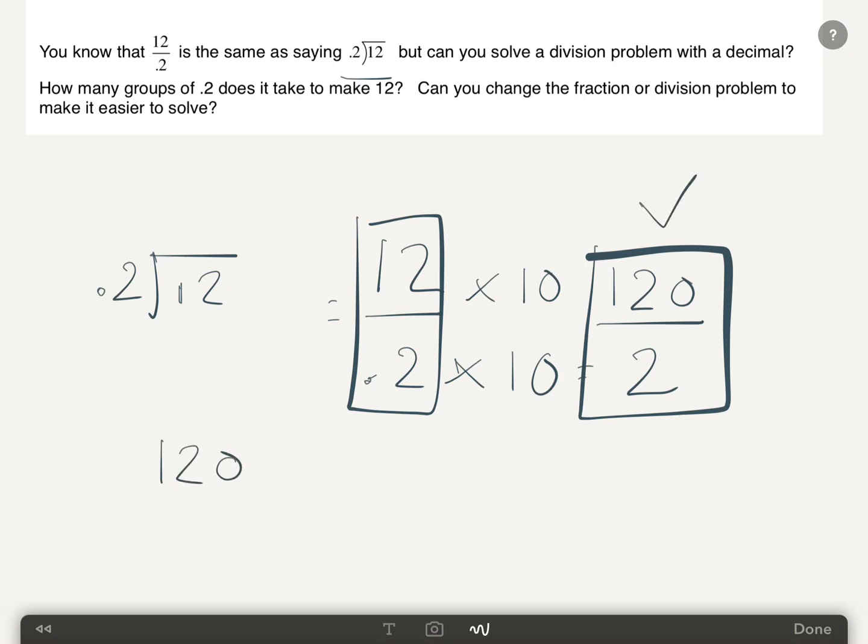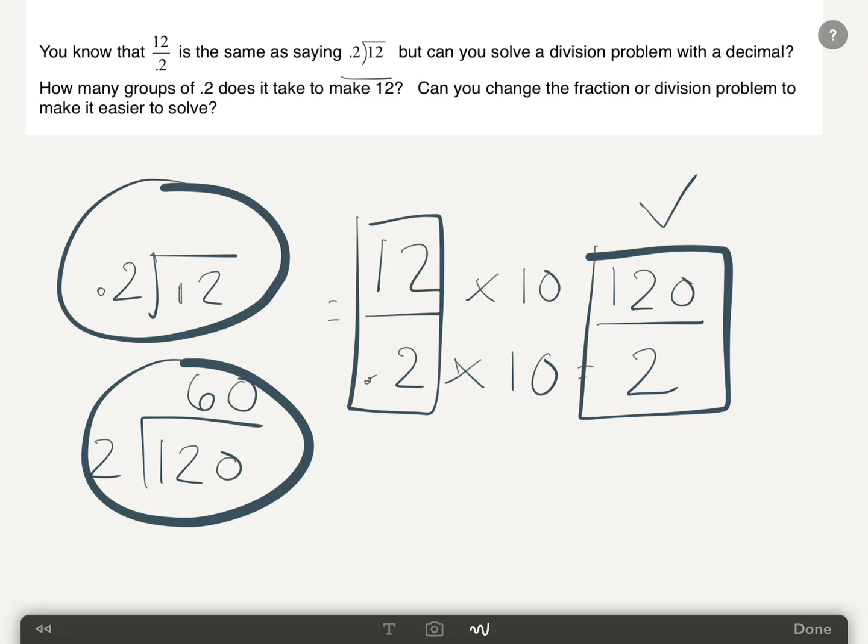120. How many 2's are in 120? And the answer is 60. It turns out that that is equivalent to this. So how many 2 tenths are in 12? The answer is 60.